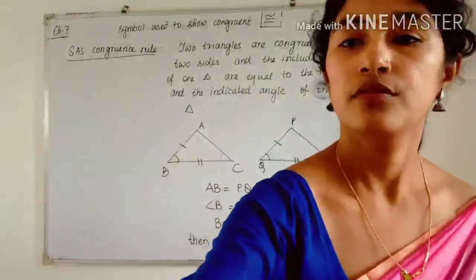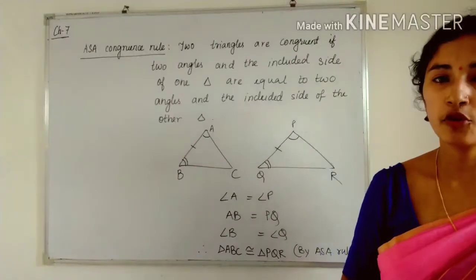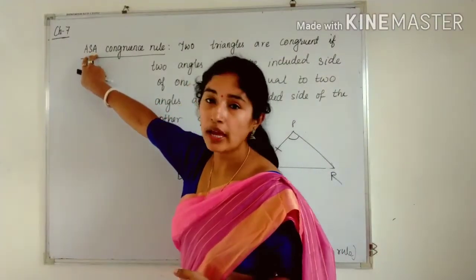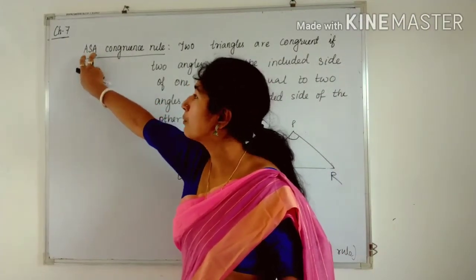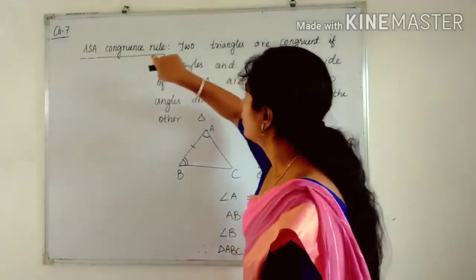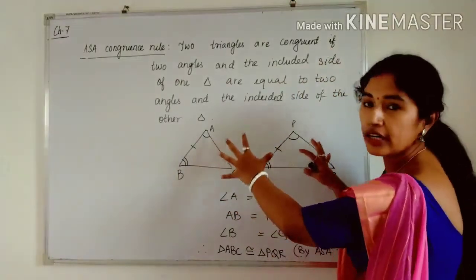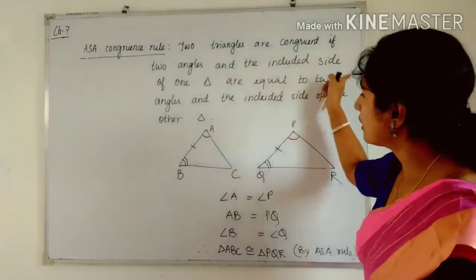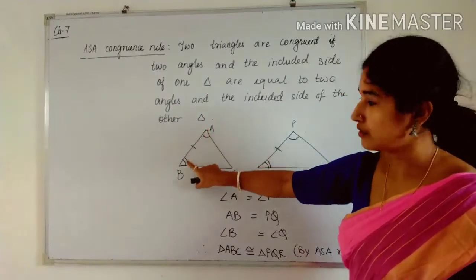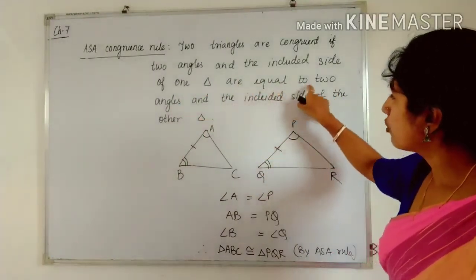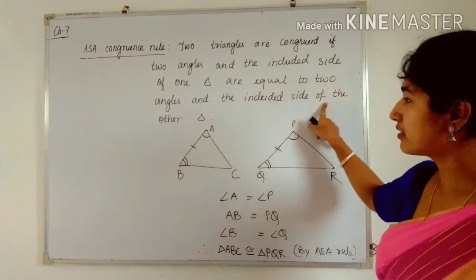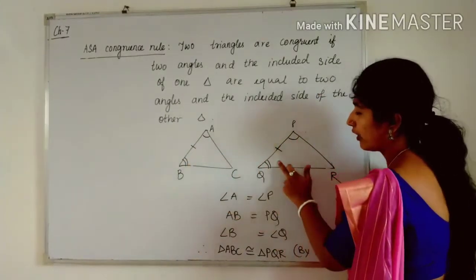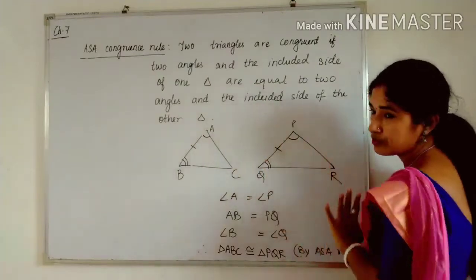The second criteria for congruency is ASA — Angle Side Angle. Here the side is included between two equal angles. Two triangles are congruent if two angles and the included side of one triangle are equal to the two angles and the included side of the other triangle. In the other triangle, angle A equals angle P, angle B equals angle Q, and the included side AB equals PQ respectively.